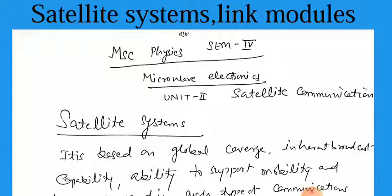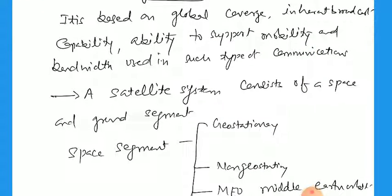We start from Satellite Systems. What is meant by systems? There are different types of satellite systems. This is an arrangement of satellites which is to cover a particular area or provide global coverage for communications. This arrangement of satellites is called the Satellite System. It is based on global coverage, inherent broad cost capability, ability to support mobility and the bandwidth used in such communications. The satellite system consists of a space segment and a ground segment — the space where the satellite is positioned and the ground where the transmitter and receiver on earth are located.